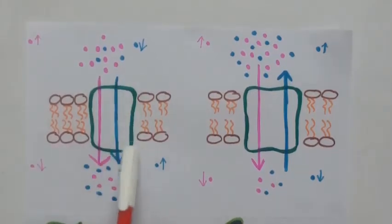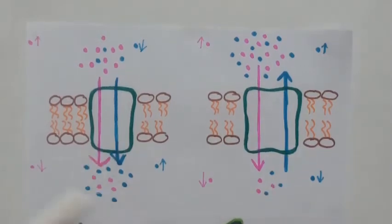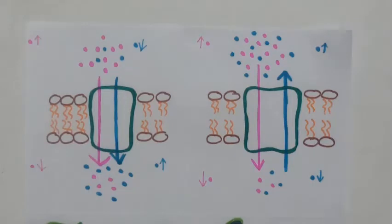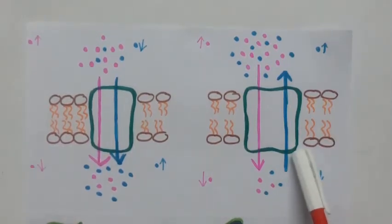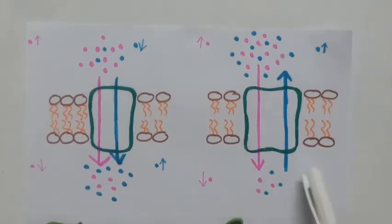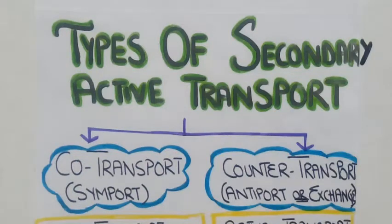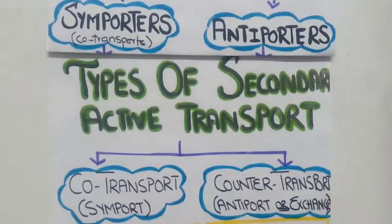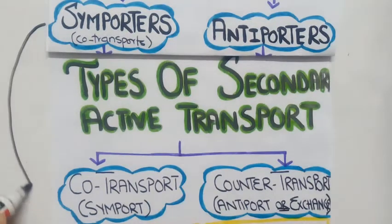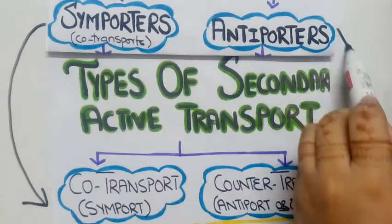This green structure visible here represents transmembrane proteins. This one is a symporter, because the two different types of molecules or ions — the pink and the blue ones — are moving in the same direction across the cell membrane. Whereas this one is an antiporter, because the two different types of molecules or ions are moving in different directions from each other across the cell membrane. So we have two types of secondary active transport: co-transport or symport, and countertransport or antiport. Symporters are involved in co-transport, whereas antiporters are involved in countertransport.